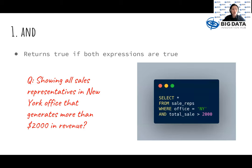First, AND returns true if both expressions are true. Here in the example, all sales representatives information gets returned when they're in New York office while also generating more than $2,000 in revenue that appear in the sales reps table. The data returned will satisfy those two conditions at the same time.